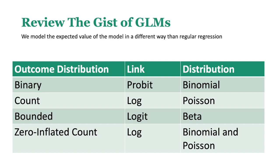With a binary outcome distribution, we've talked about logistic regression — turns out probit also works. It uses a binomial distribution like logistic, but instead of a logit link, it uses a probit. We also have counts where we use a Poisson. There's bounded outcomes where we use beta. And then there's zero-inflated count — that's count outcomes where there's a lot of zeros. Most people don't have any counts but some do, and there are different ways of handling that.